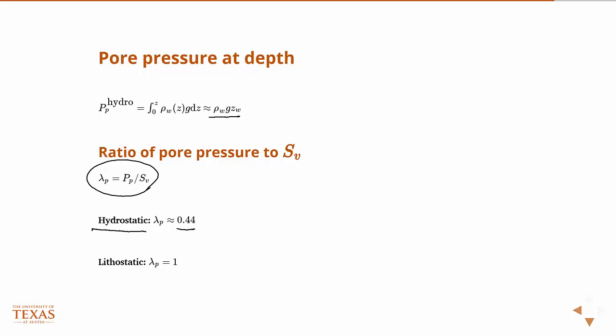This is where we get the estimate that 0.44 PSI per foot is a good estimate for hydrostatic pore pressure. The case of what would be called lithostatic — you never actually achieve this state, but lithostatic would be where the ratio is 1, meaning you have the exact same pore pressure as vertical stress.